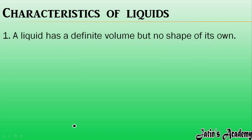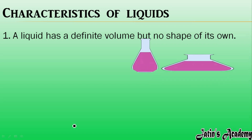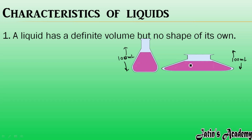Now we are having characteristics of liquids. The first characteristic is that a liquid has a definite volume but no definite shape. For example, I have two beakers here — this beaker is 100 ml and this beaker is also 100 ml. The volume of both beakers is the same, but the shape is different.